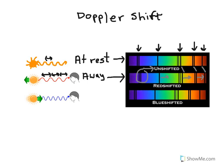Similarly, if the star is moving towards us, then the waves get closer together. The actual wave spacing stays the same throughout, but the spacing in each case is shorter than our original. Because blue is the short wavelength end of the spectrum, we call that a blue shift. And again, it doesn't look blue, but what's happened is all of our spectral lines have shifted towards the blue end of the spectrum.